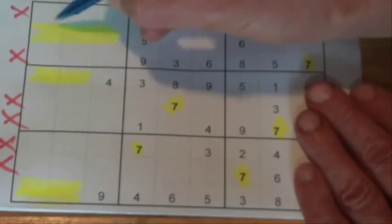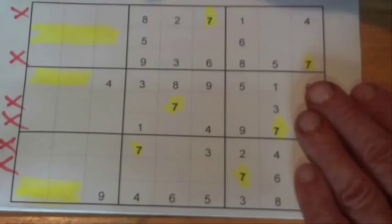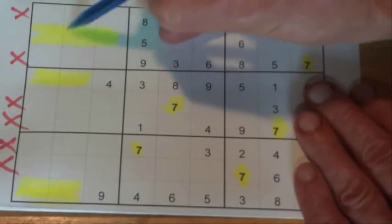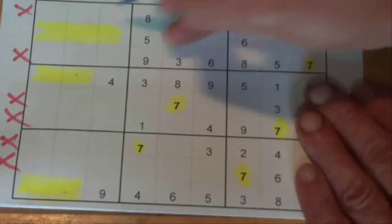Then that means that a 7 can't be in that cell there, because it's going to be in one of those, and then it can't be in that cell there, a 7, because you're going to have a 7 in one of those cells.